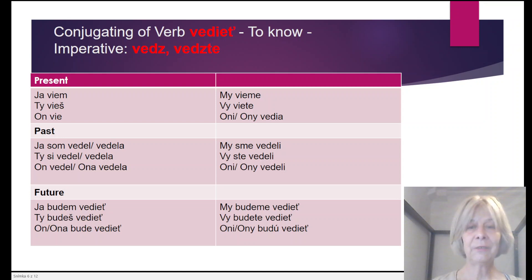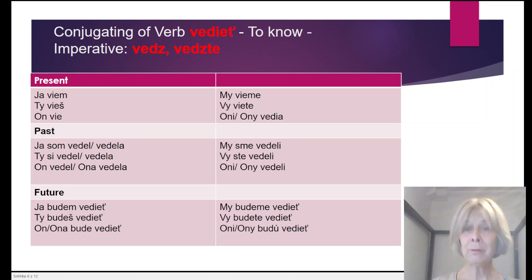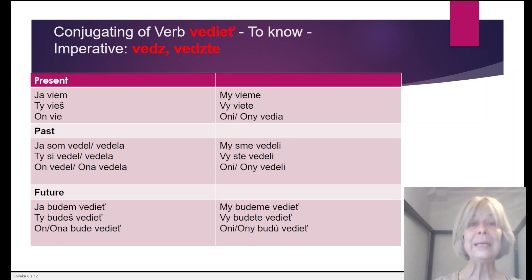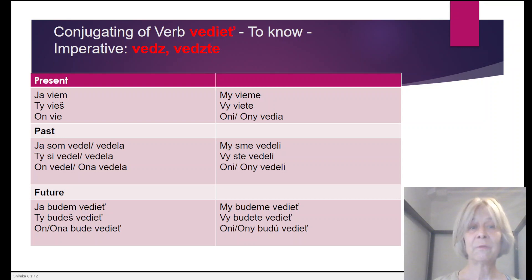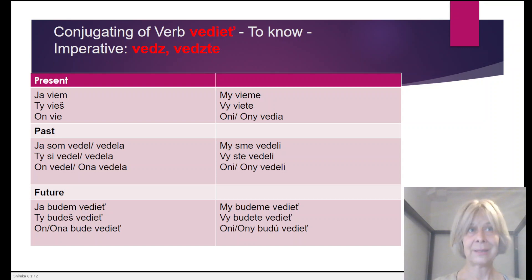A question is formed just with the help of intonation: Ja viem? — Do I know? Ty vieš? On vie? My vieme? Vy viete? Oni vedia? Past: Ja som vedel? Ja som vedela? And so on. It's simple.